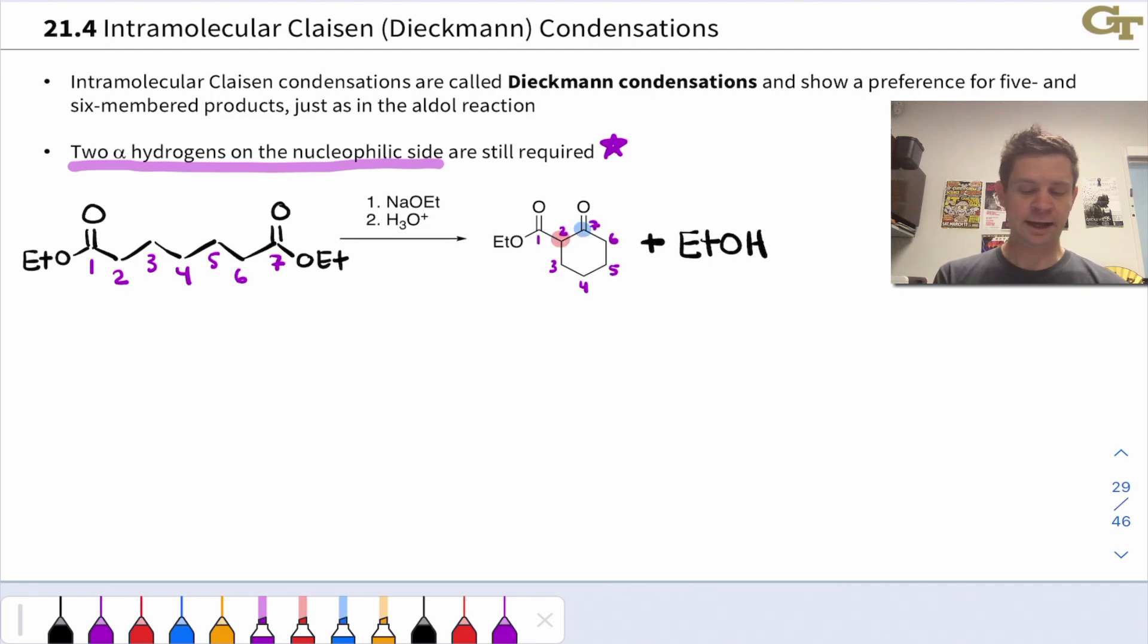And we can see here, again, that carbon two is going to act as the nucleophile, carbon seven as the electrophile, and this is our product. And in fact, we could also equivalently think of carbon six acting as the nucleophile here via an enolate on this ester and carbon one acting as the electrophile. And we'd end up with the same product since the two esters in this substrate are equivalent by symmetry.